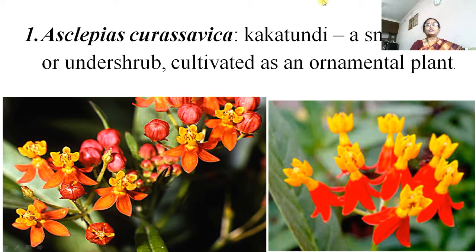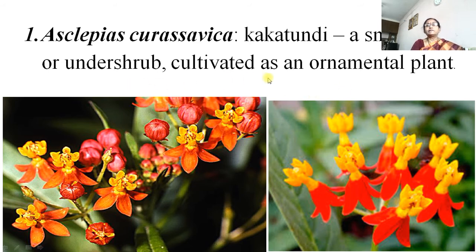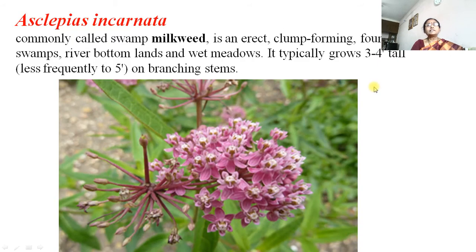Important plants: Asclepias (kureshavika / kakatundi) — the name 'kakatundi' means 'like a mouth of a crow' due to its flower shape. It is a small herb or undershrub, cultivated as an ornamental plant because of its beautifully colored flowers. Asclepias incarnata has purple flowers with white stigma heads — beautiful colored flowers, grown in gardens for their beauty.